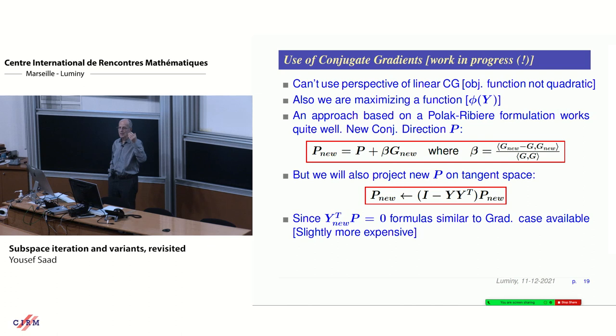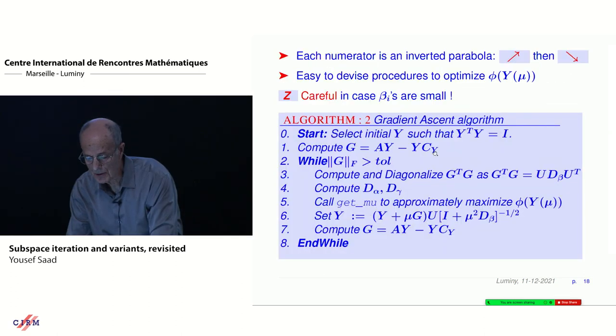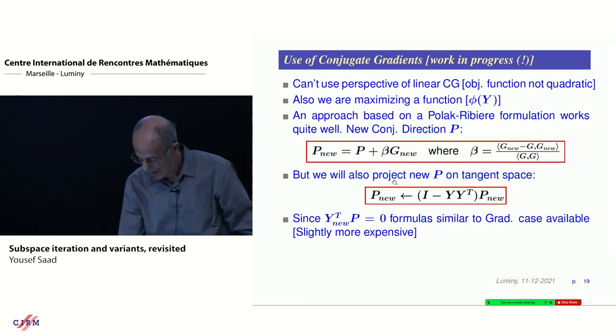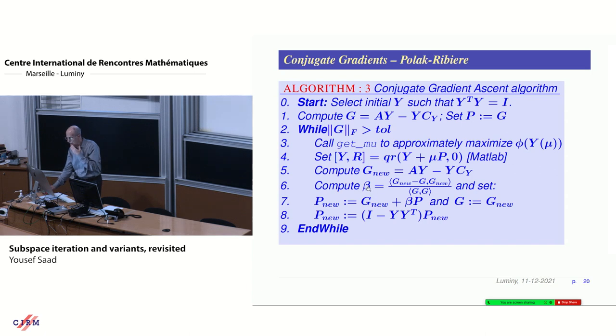How about conjugate gradient? I move from subspace iteration, which is more like Gauss-Seidel, to gradient, and now I'm going to try to see conjugate gradient. This is work in progress. In conjugate gradient, you do something like this. The P here mixes essentially the current P and the old G, the old P and the new G. We use Polak-Ribiere, which requires beta to be of this form. Then we do an extra step, which is we project on the manifold, on the tangent space.